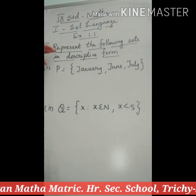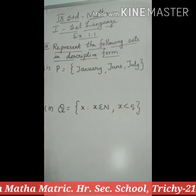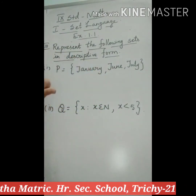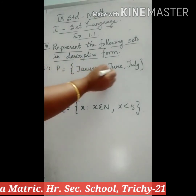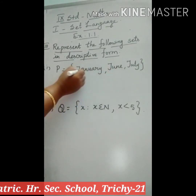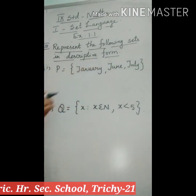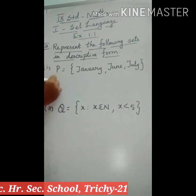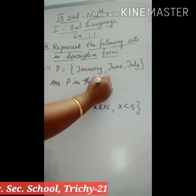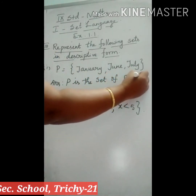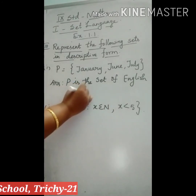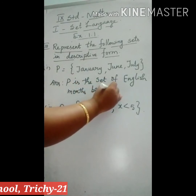Next, represent the following sets in descriptive form. What is descriptive form? A set is described in words, in a sentence. The first question is: P = {January, June, July}. These are English months beginning with the letter J. So the answer is: P is the set of English months beginning with J.